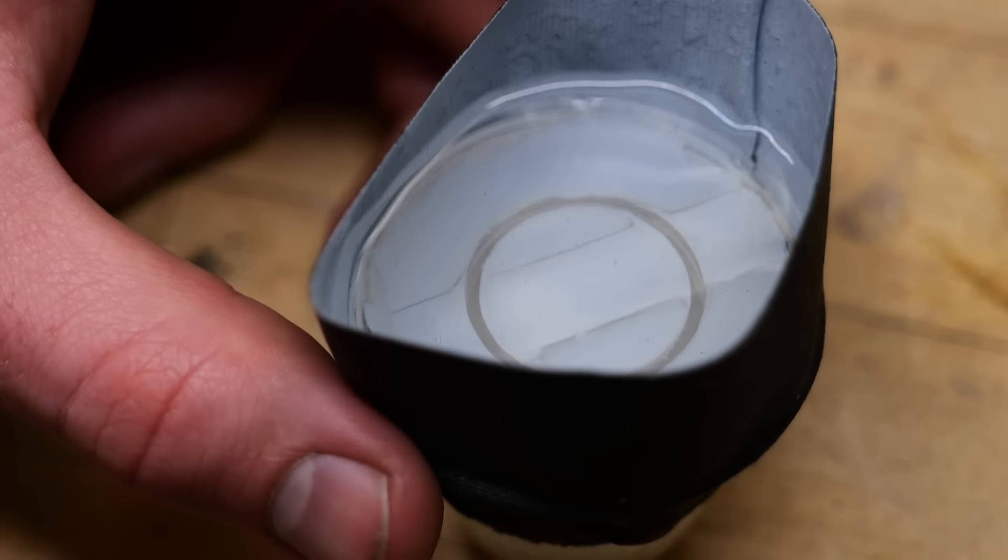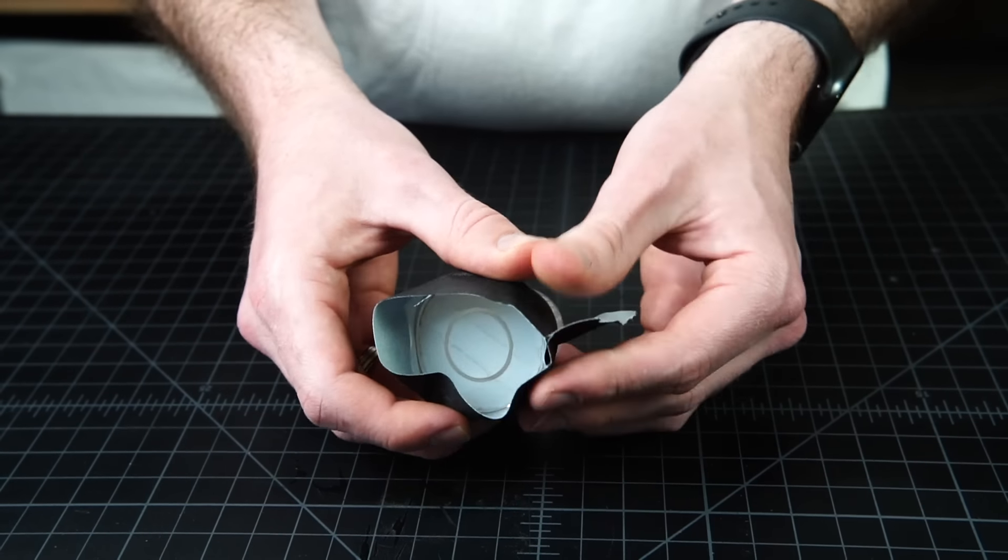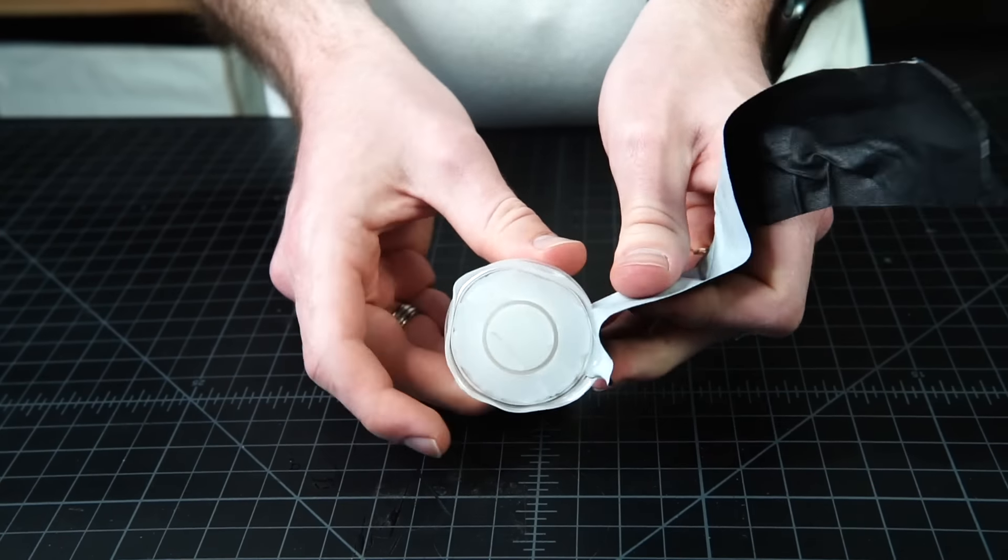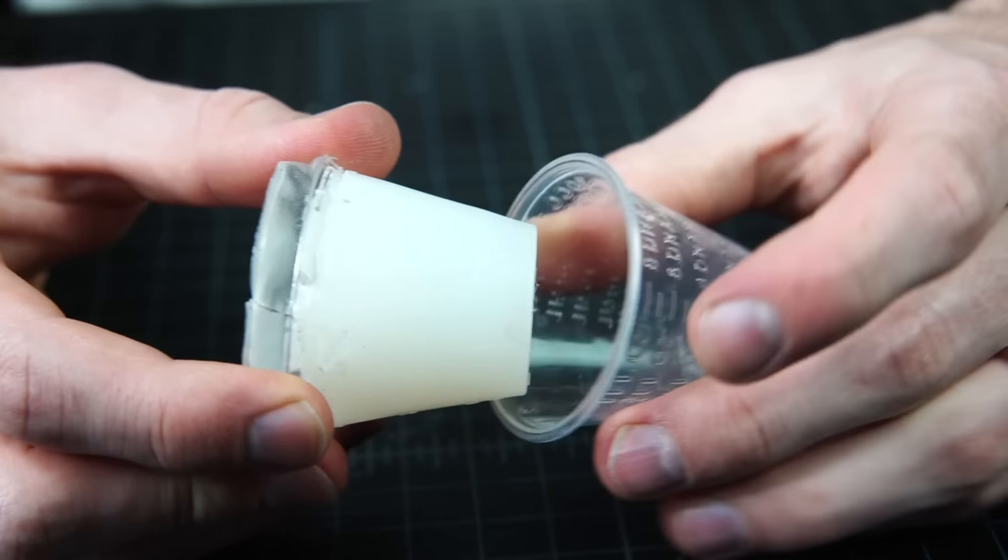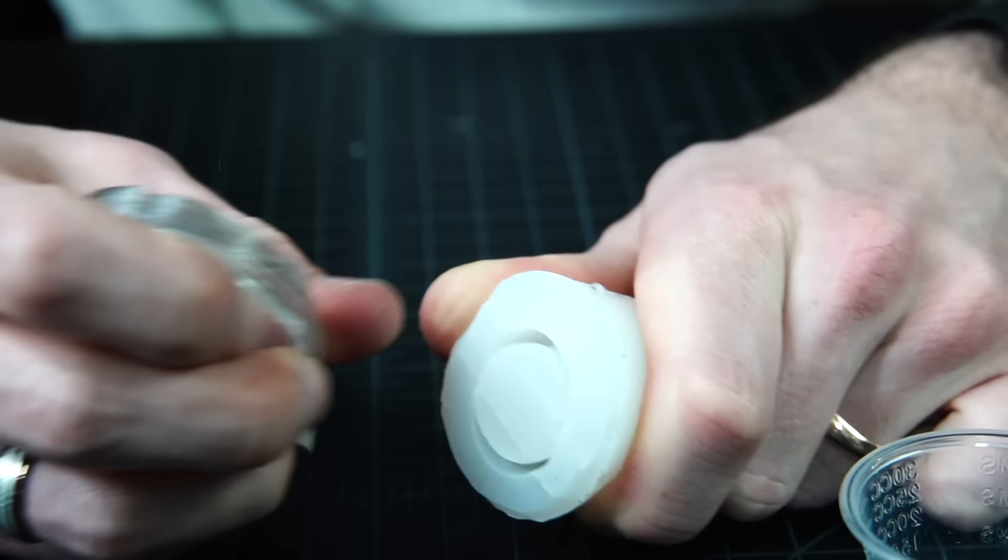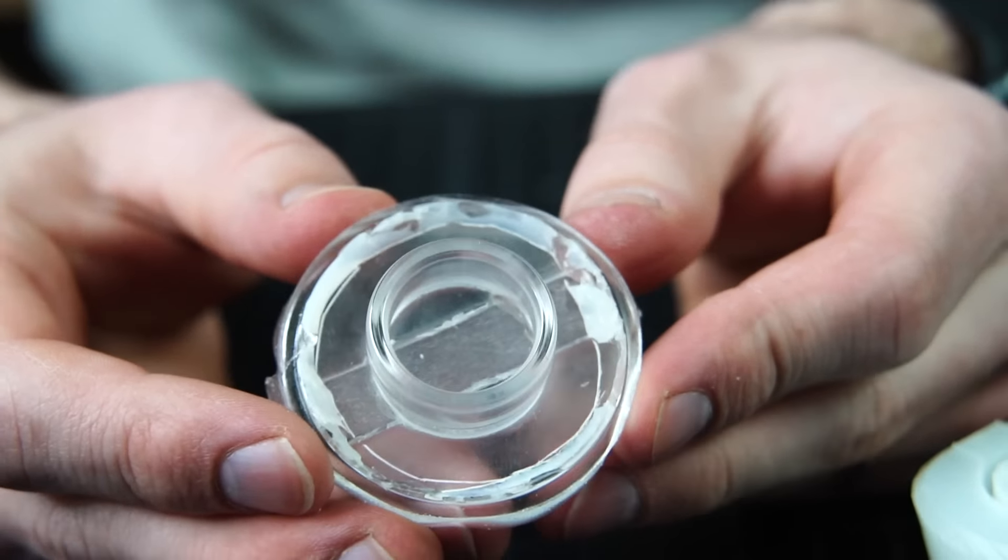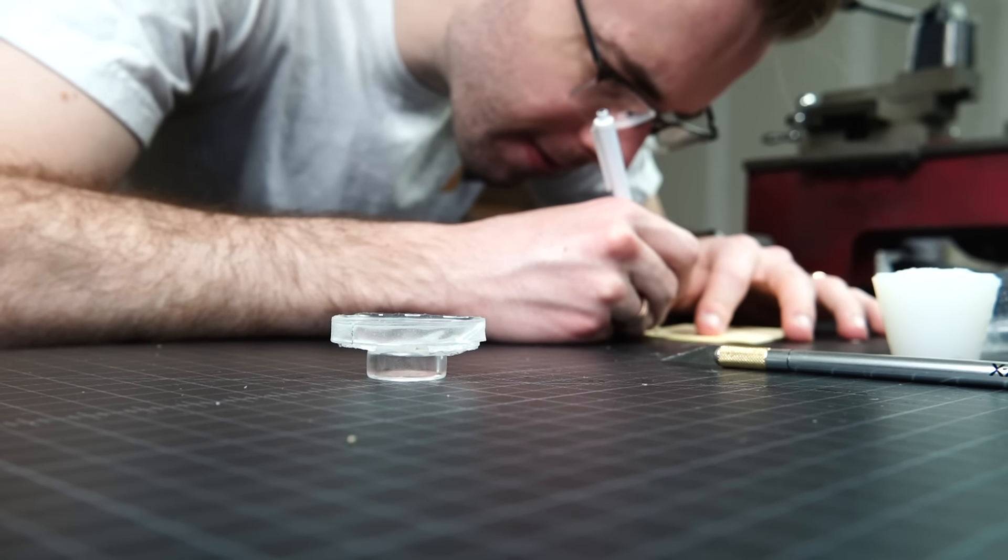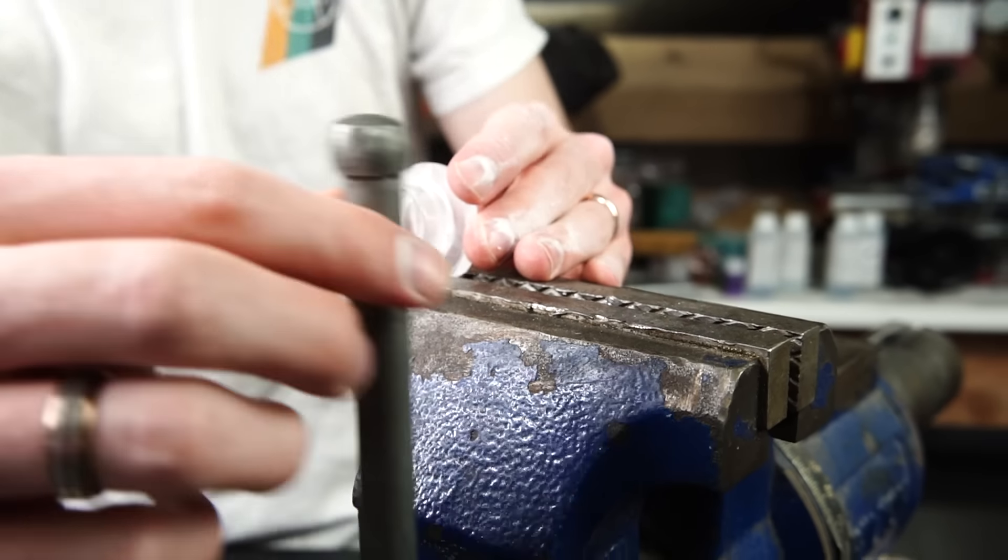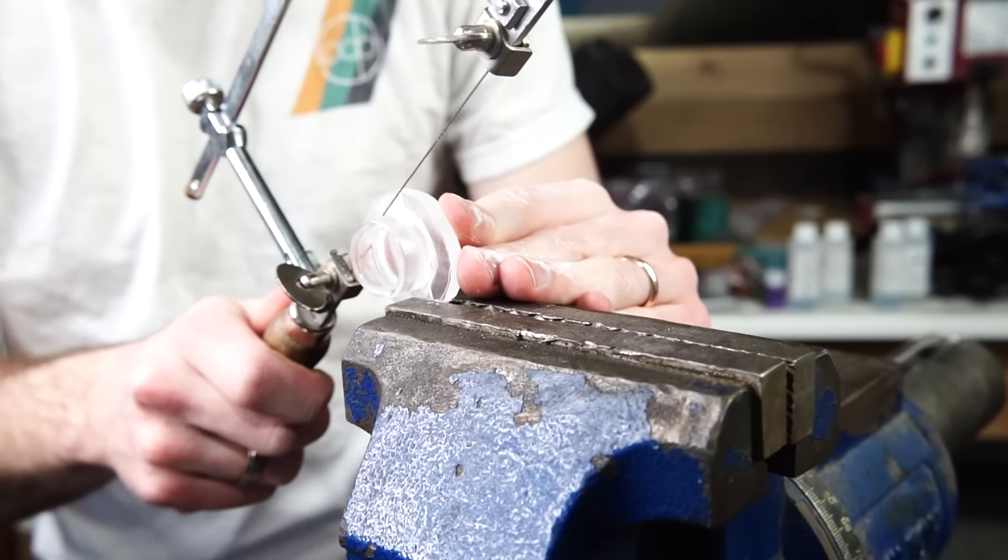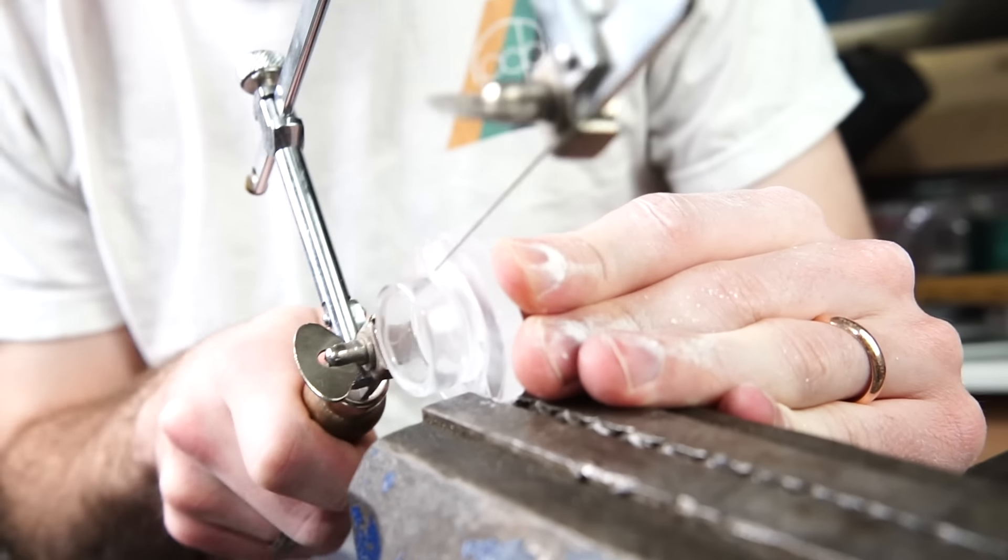Alright, now I'll just let it cure overnight and make sure that it's fully hardened. And I'll carefully use a jeweler's handsaw to separate the blank from the excess resin.